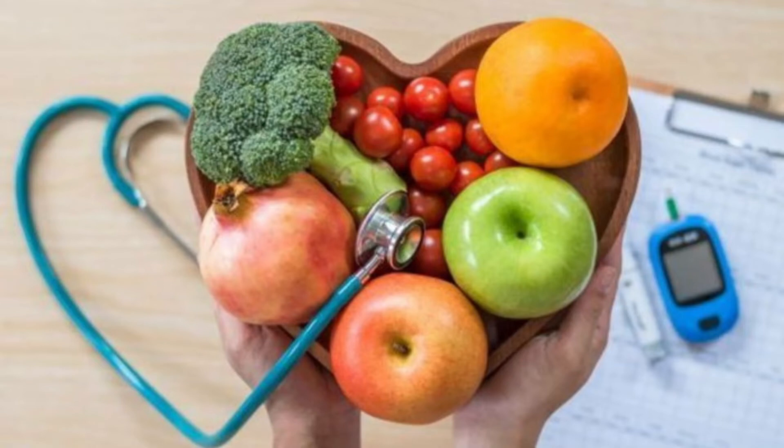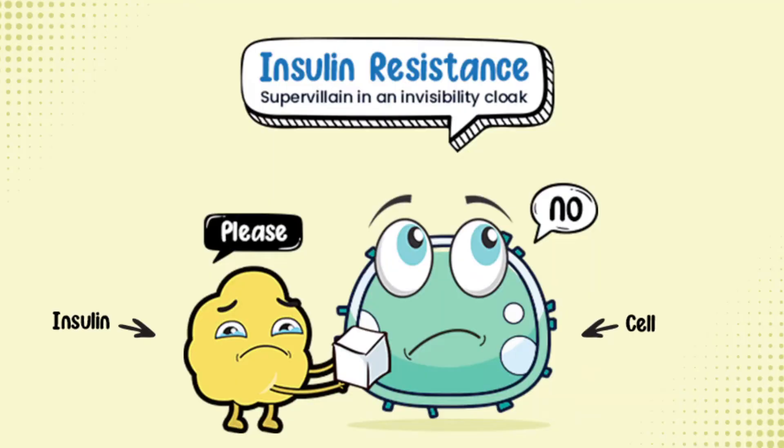Damage to the nerves related to digestion can cause problems with nausea, vomiting, diarrhea, or constipation. For men, it may lead to erectile dysfunction. Kidney damage, or nephropathy — the kidneys hold millions of tiny blood vessel clusters called glomeruli that filter waste from the blood, and diabetes can damage this delicate filtering system.